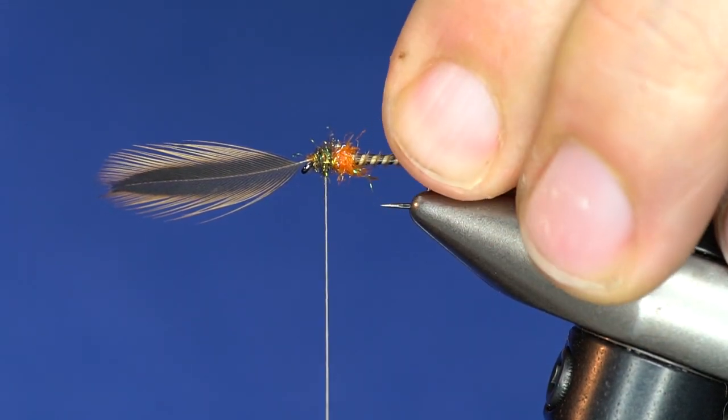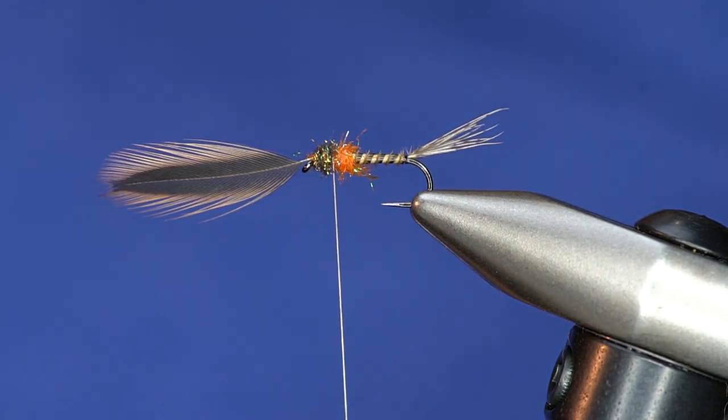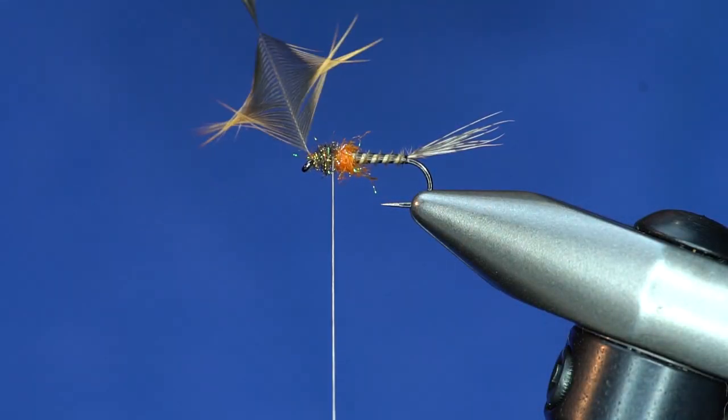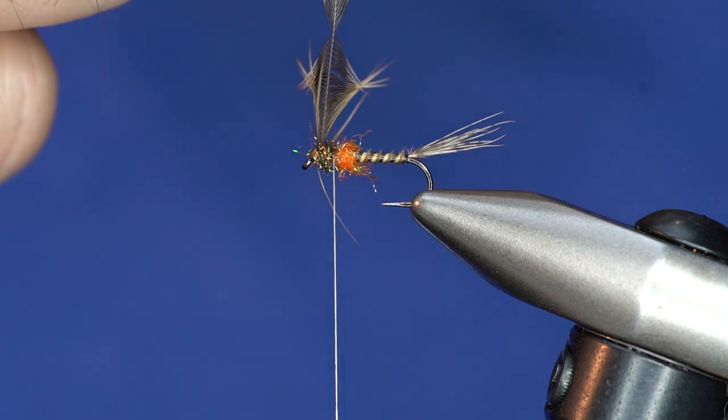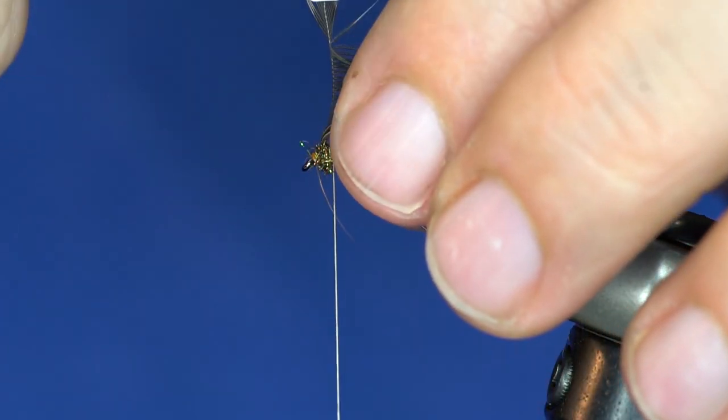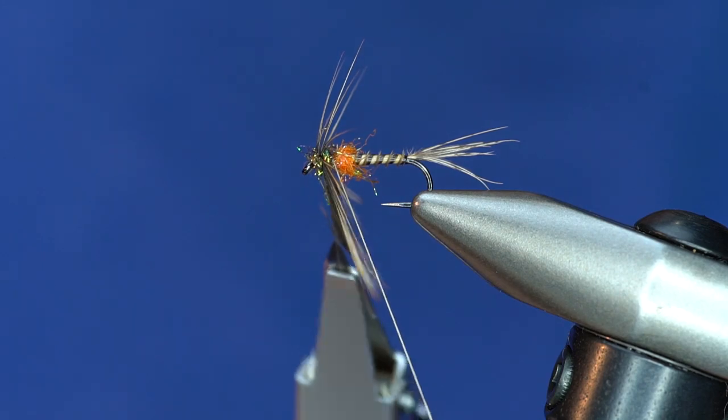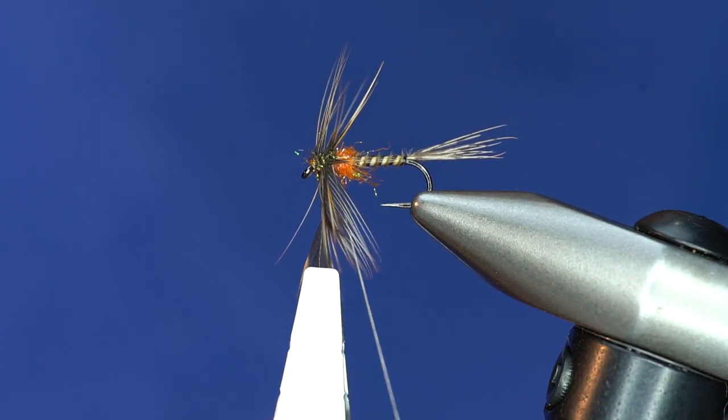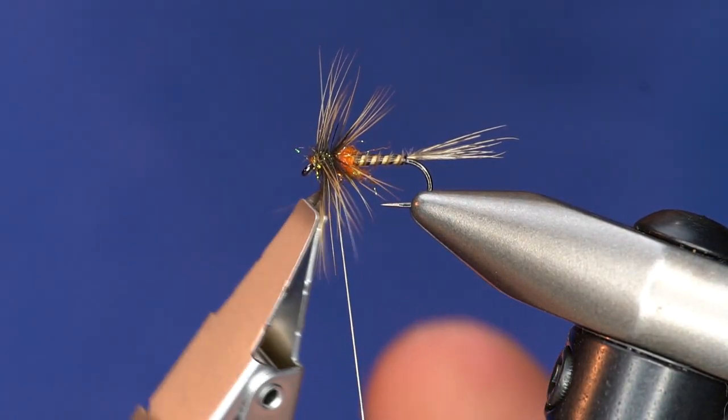So I'll just grab some hackle pliers. And then I'm going to start rotating this and winding it back. If you find you need to, you can always preen the fibers after each wrap. But like I said, this method here makes it so you don't have to do that as much. And I'm going to get that right into where I tied off.